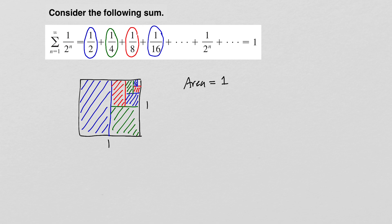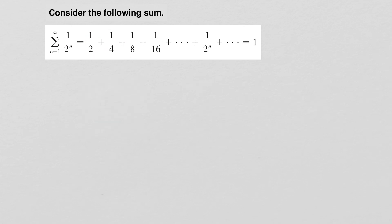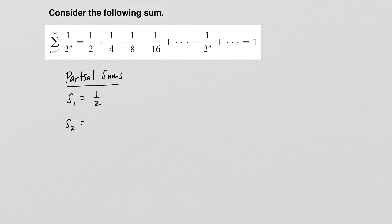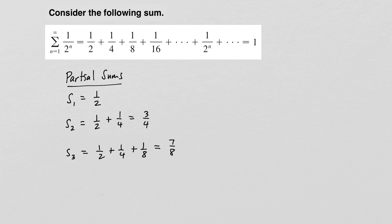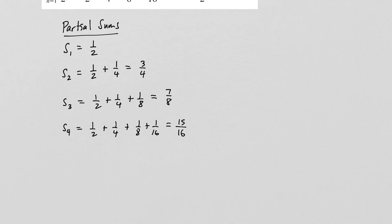Now let's show an algebraic way of getting this sum using partial sums. The partial sum S_1 is just the first term: 1/2. S_2 is the sum of the first two terms: 1/2 plus 1/4, which equals 3/4. The sum of the first three terms is 1/2 plus 1/4 plus 1/8, which equals 7/8. The sum of the first four terms is 1/2 plus 1/4 plus 1/8 plus 1/16, which equals 15/16.